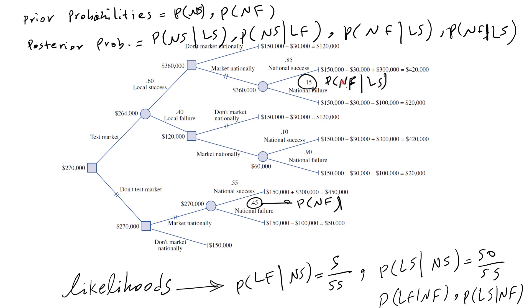Posterior probabilities include: national success given local success, national failure given local success, national success given local failure, and national failure given local failure — four in total. Then we have likelihoods. Likelihoods are not shown here because they are the opposite of what we need. On the decision tree we need posterior probabilities, but sometimes the opposite — likelihoods — are given to us.